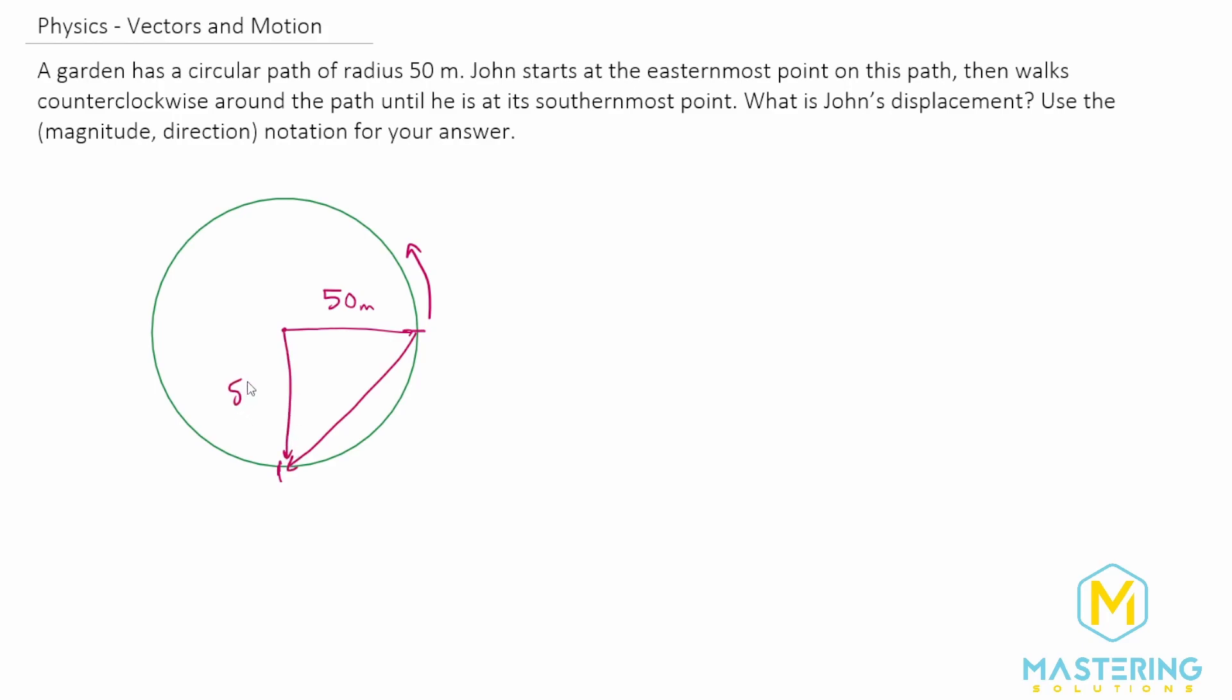So now we just created a right triangle and it's a special kind of right triangle where both of the legs are the same distance. Now in the answer they want us to tell what the magnitude and the direction is for the answer.